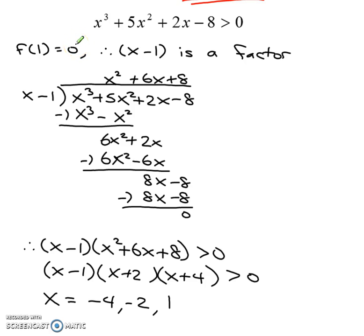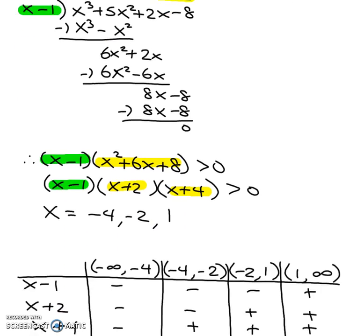Factor theorem says that x minus 1 must be a factor. If this is one of the factors, I put it on the outside as a divisor, and I divided the dividend. This guy right here is our quotient. We're going to take our quotient. It goes right there. Now that it's a nice quadratic, I can easily break down the quotient into two factors. So this one and this one. You're going to solve each of your factors, and you're going to put them in order, because the order will help you to create your table.